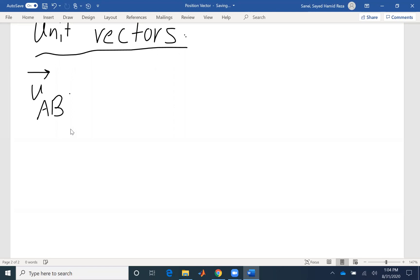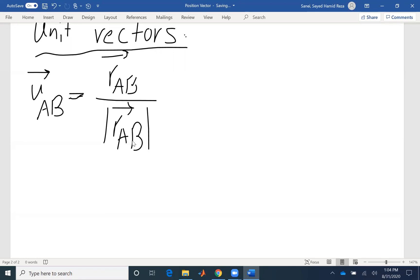The definition of unit vector is our vector divided by its magnitude. So if you're going to find UAB, it doesn't have to be a position vector—it could be a force vector or velocity vector. If you want to find a unit vector, the direction of that vector, we just divide the vector by its magnitude.